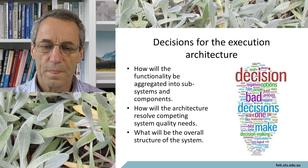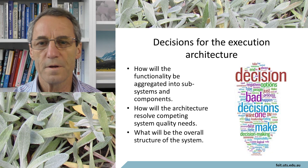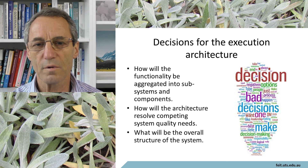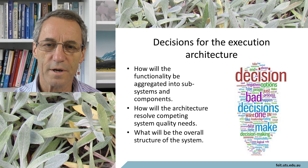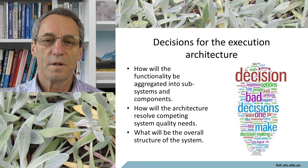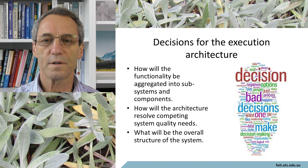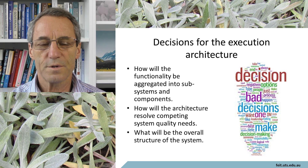The third decision coming in the execution architecture is the overall structure of the system — the main architectural pattern. This includes choices like whether you'll use Model-View-Controller, a microservices architecture, pipes and filters, and so on. These are the key things you have to settle on and decide when doing the architecture.